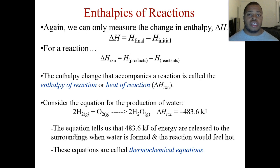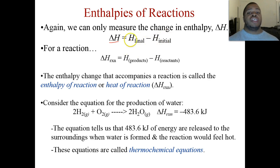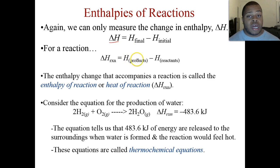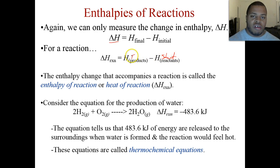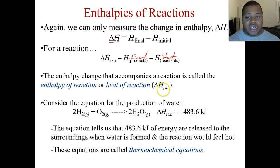For the enthalpy of a reaction, we can only measure the change in enthalpy — we cannot say we know the exact absolute enthalpy. Delta H, the change in enthalpy, equals the final enthalpy minus the initial: what energy I have at the end minus what I started with. For a reaction, delta H_rxn equals the enthalpy of the products minus the enthalpy of the reactants. The enthalpy change that accompanies a reaction is called the enthalpy of the reaction or heat of the reaction, seen as delta H with subscript 'Rxn'.